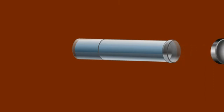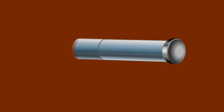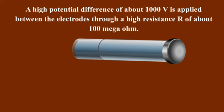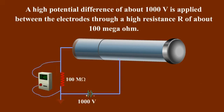One end is fitted with a thin mica sheet and this end acts as a window through which radiations enter the tube. A high potential difference of about 1000 volts is applied between the electrodes through a high resistance R of about 100 mega ohms.